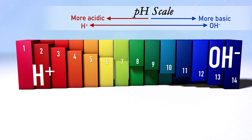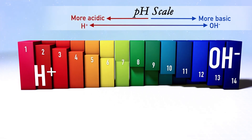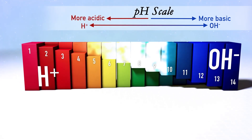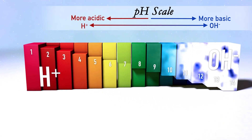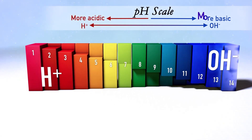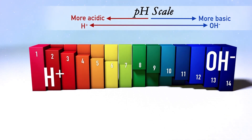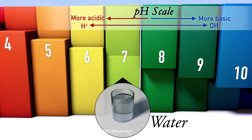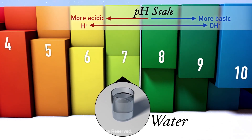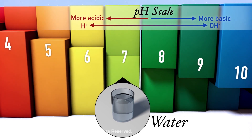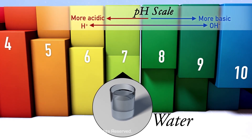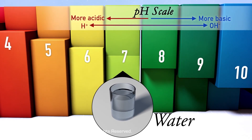In contrast, the more hydroxide ions a solution has, the higher its pH number and the more basic or alkaline it is. Water is pH neutral because it contains equal numbers of hydrogen and hydroxide ions. So water is right in the middle of the scale at a neutral pH of 7.